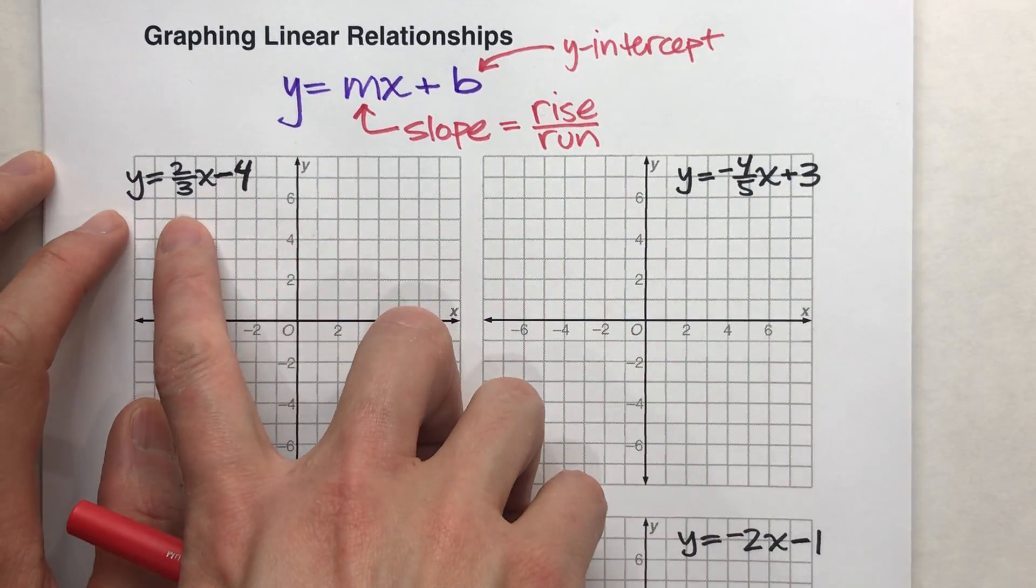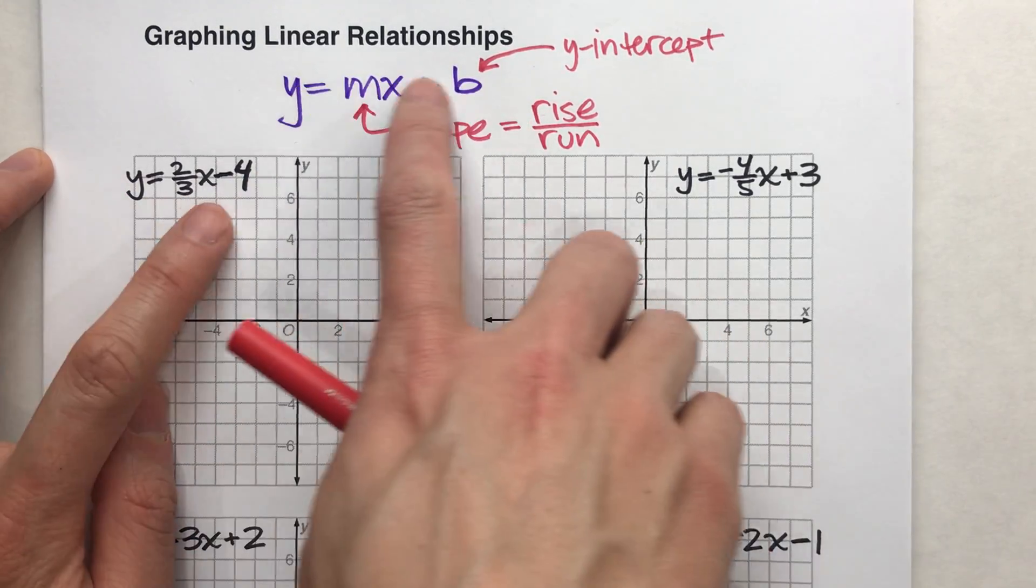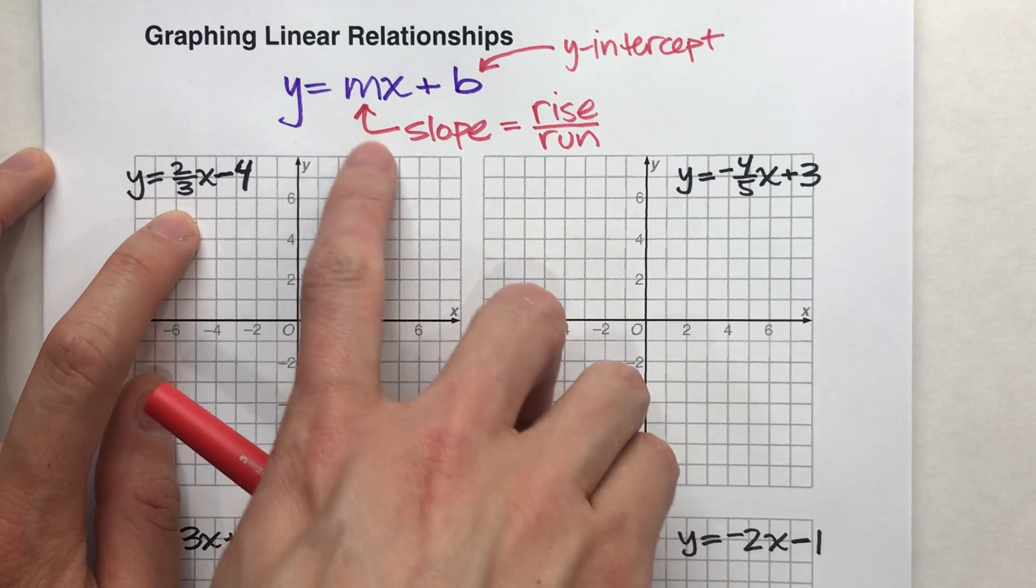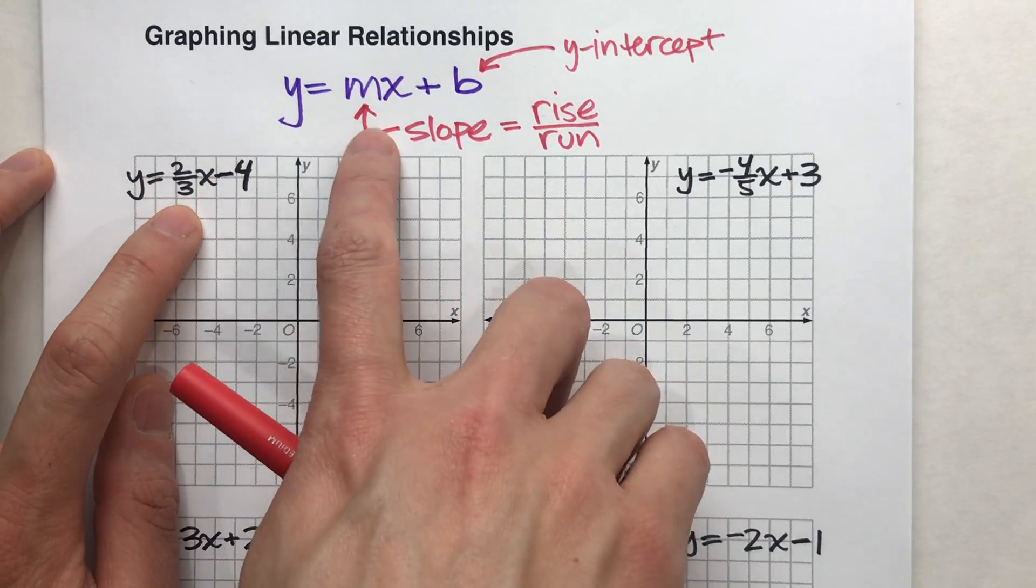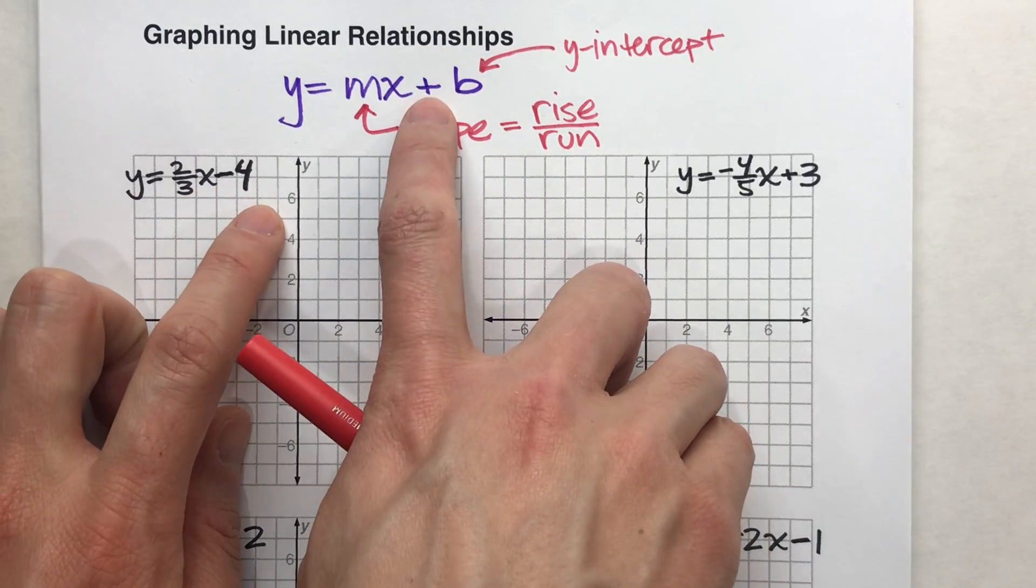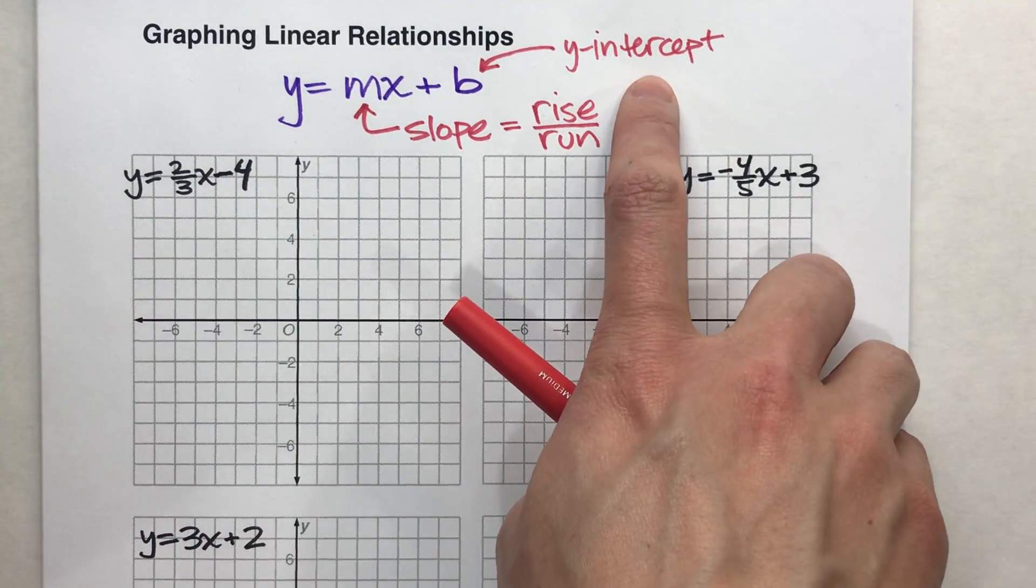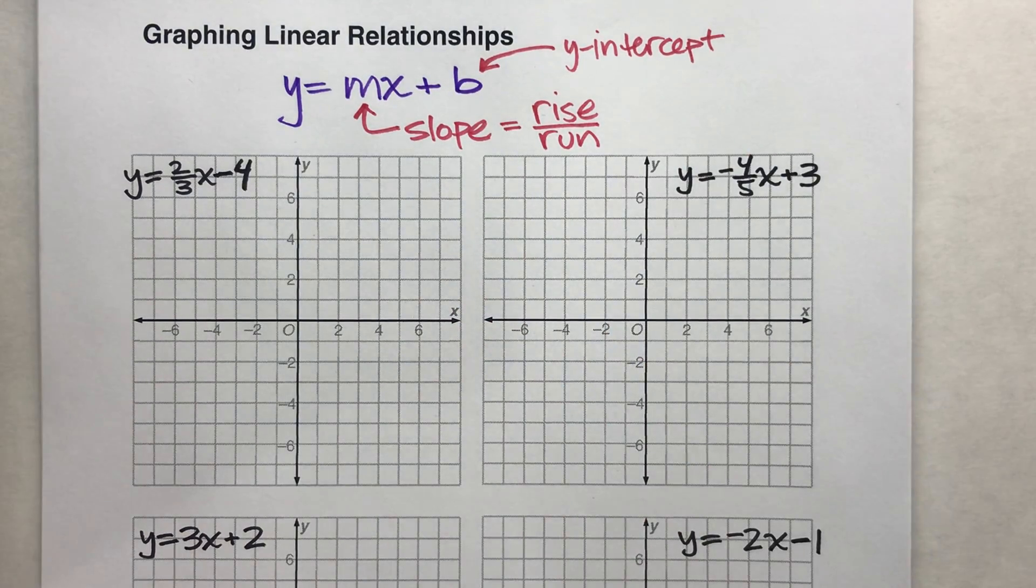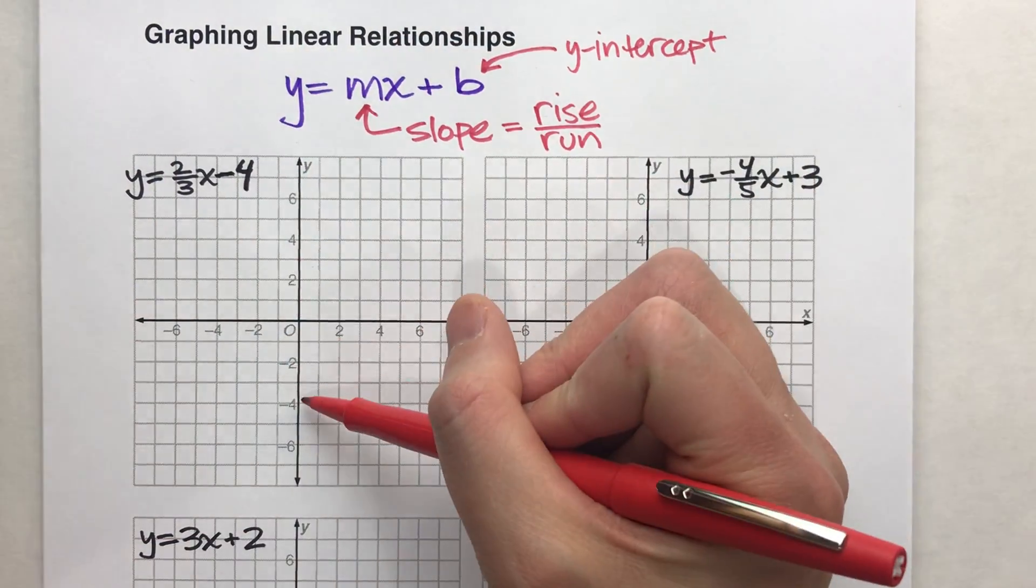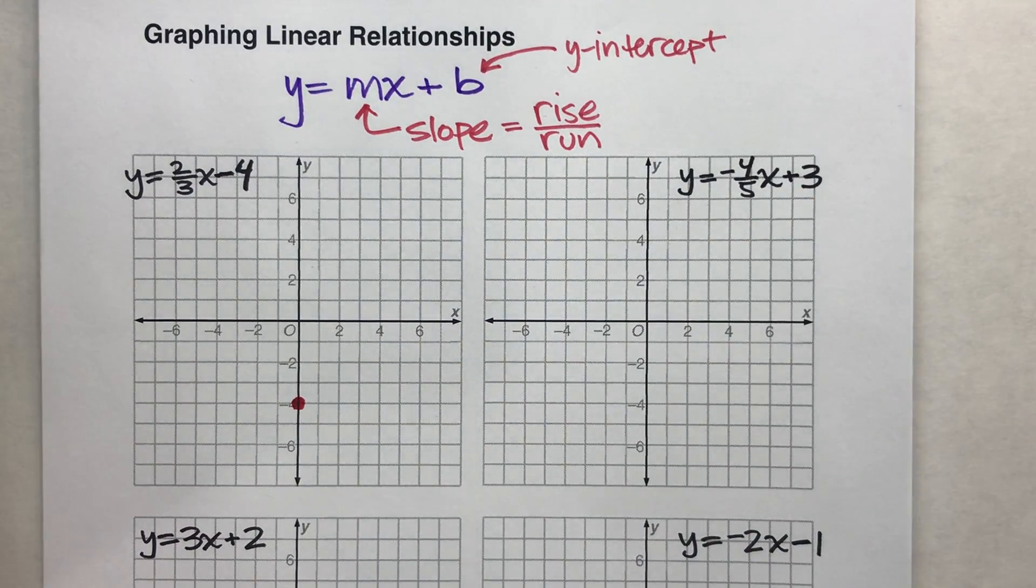So let's do an example here. Y equals two-thirds x minus four. Now, notice, it's in that format, y equals something x plus something, where that first number next to x, that two-thirds, that's our slope. The number on the end, that plus b is our y-intercept. In this case, it says minus four. So that minus four is our y-intercept. So what that tells us is our graph here is going to cross the y-axis at negative four. So I'm going to plot a point there. I know that point's going to be on our line.